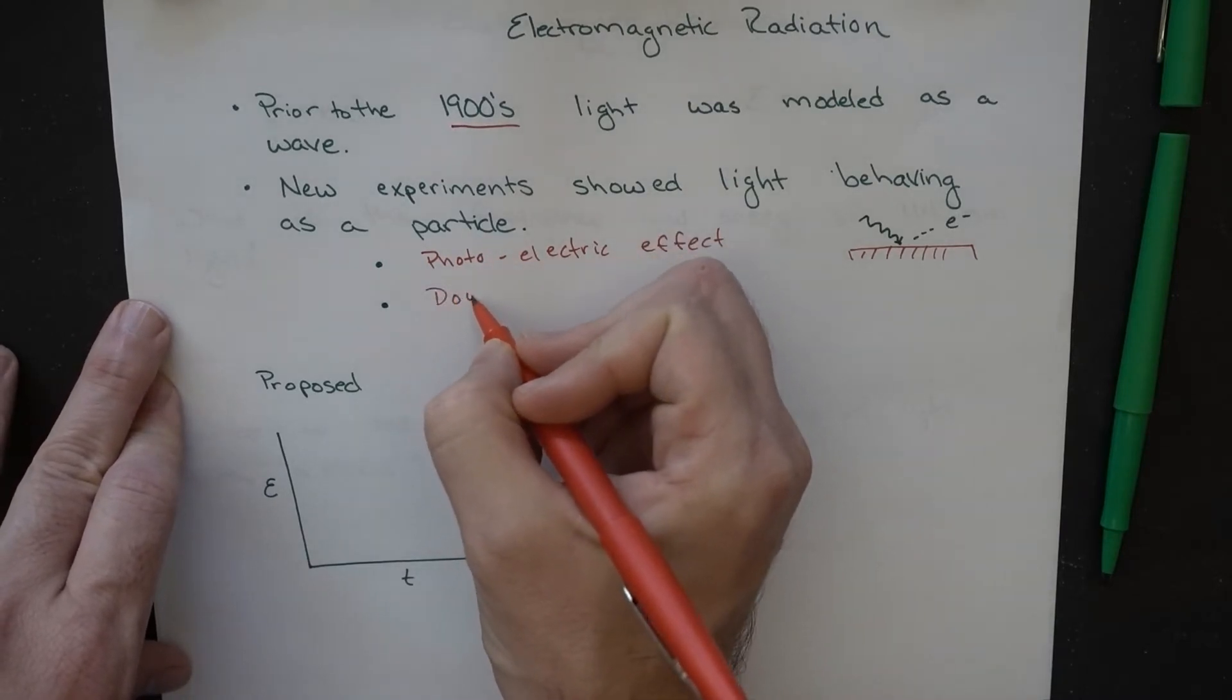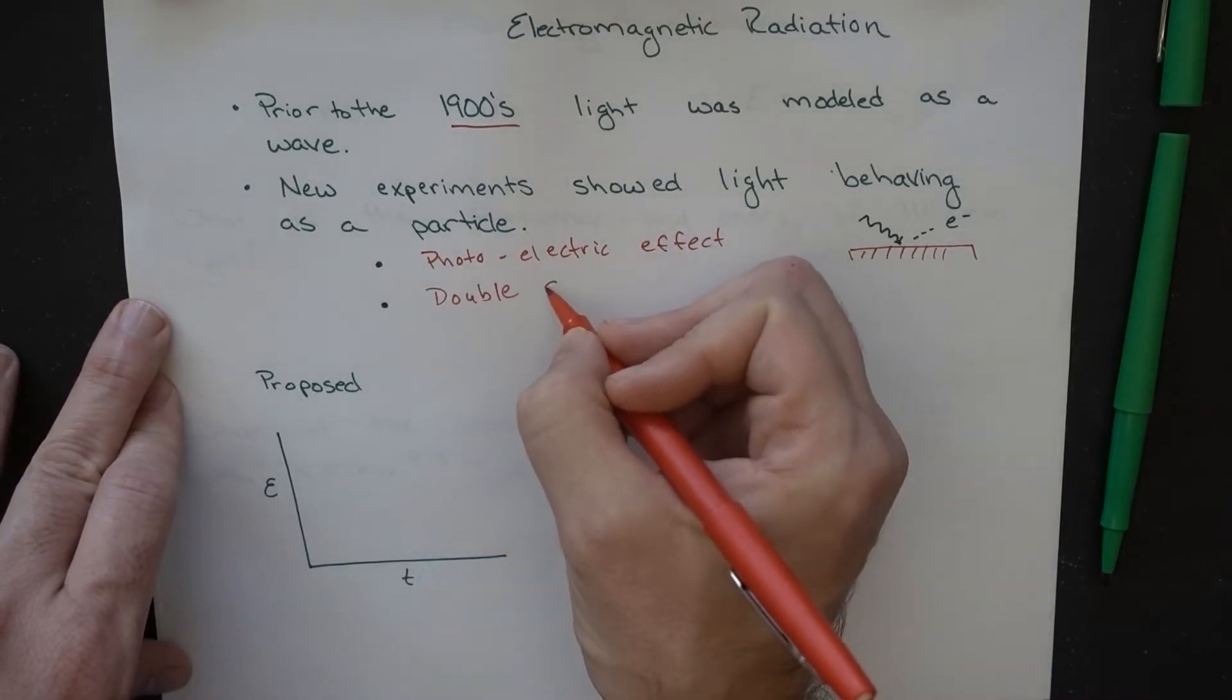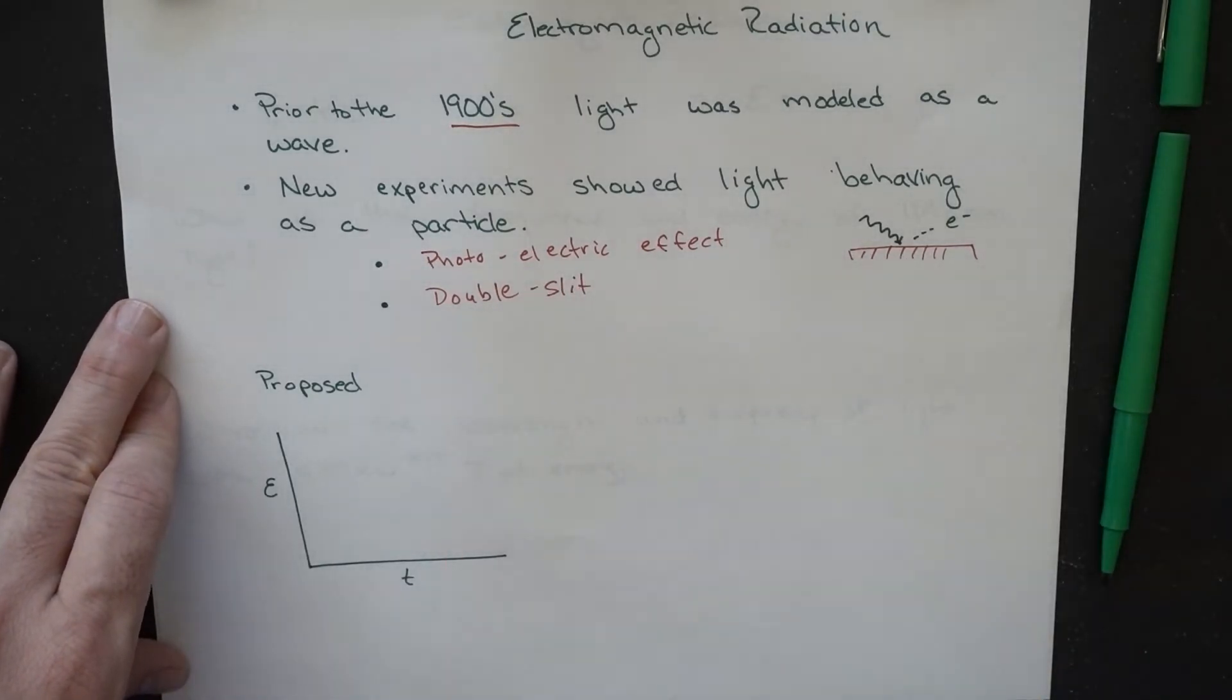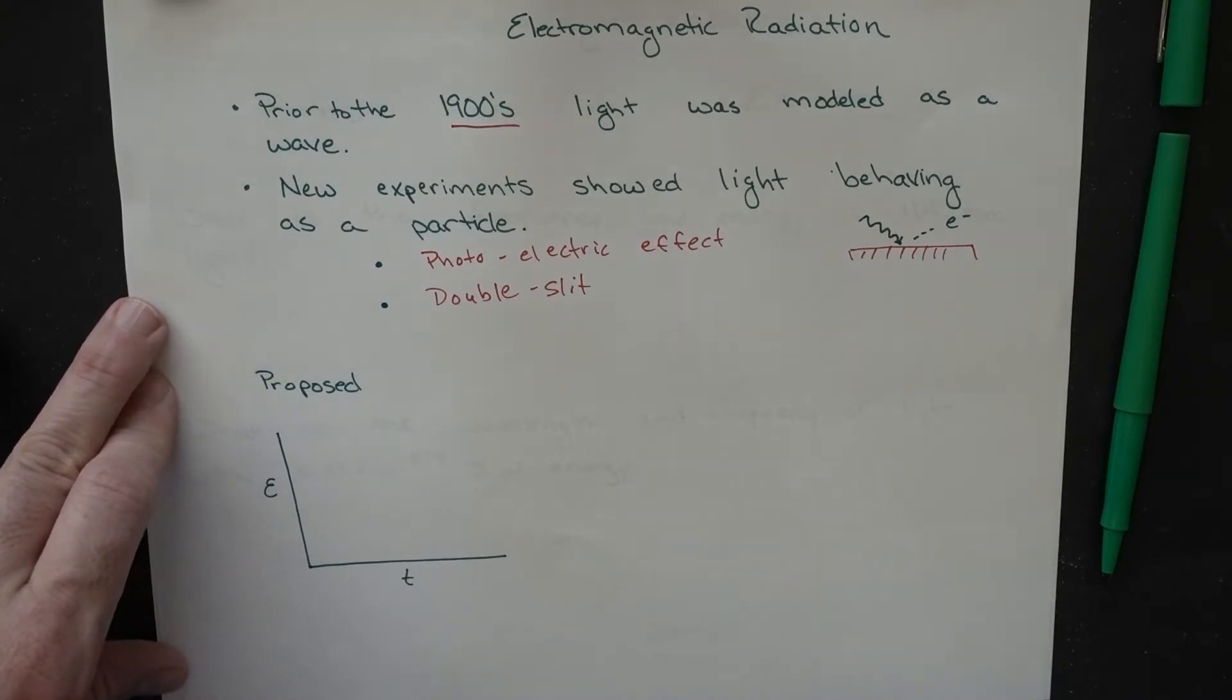Another are what's known as the double slit experiments, where we saw interesting interference patterns when we sent beams of light through multiple slits. And again, that was telling us something about how light seems to be behaving.